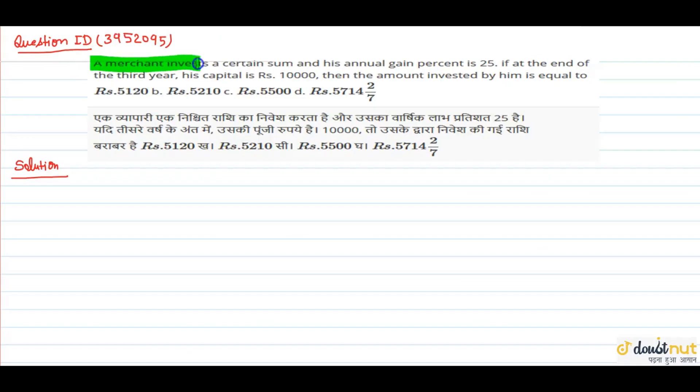A merchant invests a certain sum and his annual gain percentage is 25%. It is an annual gain percentage. This gain means 25% of his gain. If at the end of the third year, his capital is 10,000 Rs.